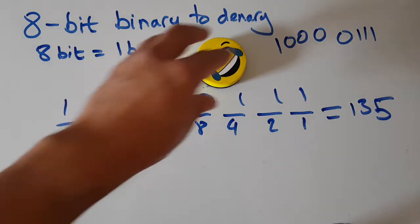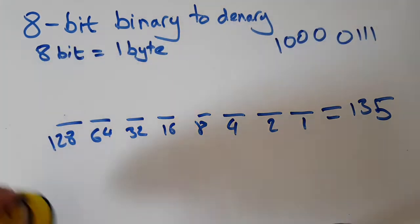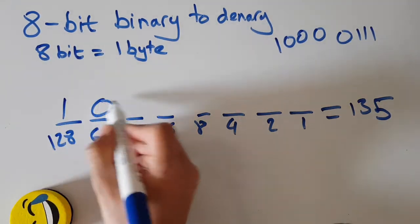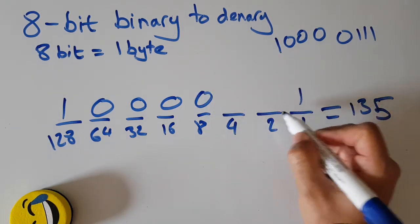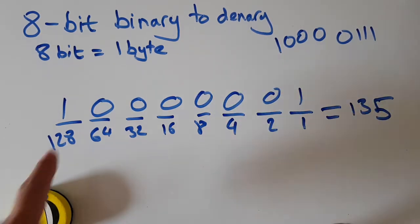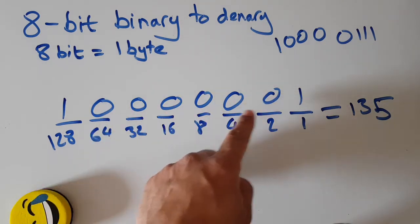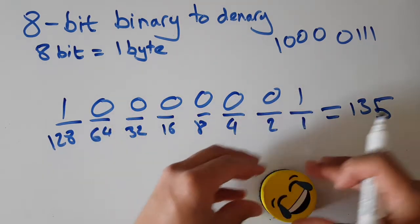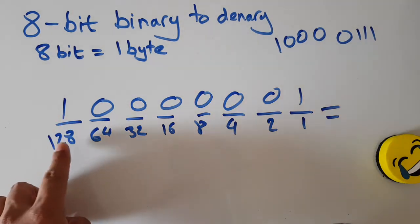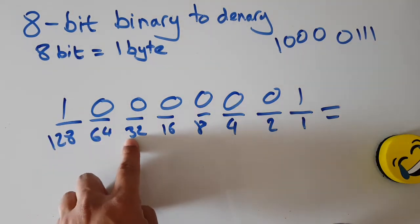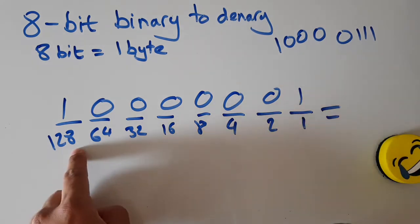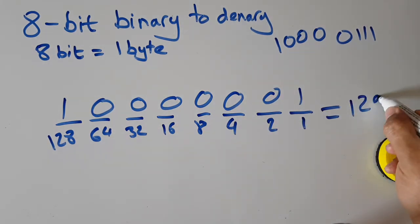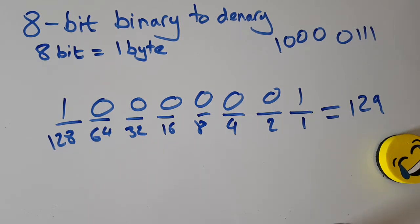Let's try another random one: 1-0-0-0-0-0-0-1. Hopefully you can figure that out quite quickly. The only thing switched on is 128. I ignore this one, this one — that's off, that's off, that's off — that's switched on. So 128 plus 1 is 129.